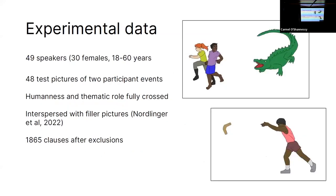Our experimental data comes from a picture description task. We have 49 participants, a mix of men and women with a wide range of ages. They were shown 48 test pictures of two-participant events, and in these pictures humanness and thematic role were fully crossed. So we had 12 pictures of humans acting on non-humans, and so on with all different combinations. These pictures were completely independent of each other and interspersed with filler pictures. You can read more about the methodology in a recent paper that just came out in Language.